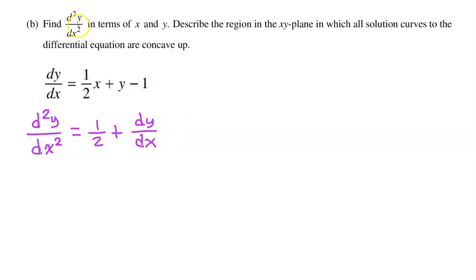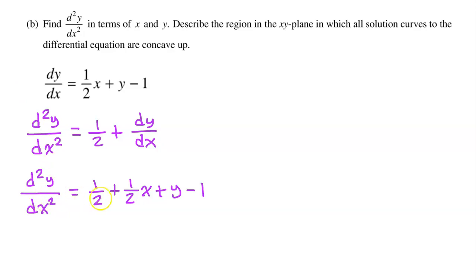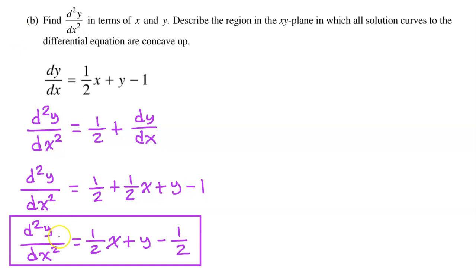We need to find the second derivative in terms of x and y. Right now, we have dy/dx appearing in the expression, so we need to replace it. Since dy/dx equals one-half x plus y minus 1, we substitute that expression in. Combining the one-half with the negative 1 gives negative one-half. This yields the second derivative in terms of x and y.